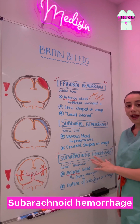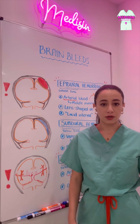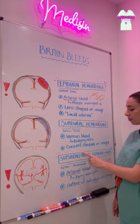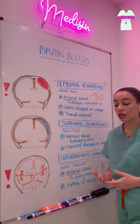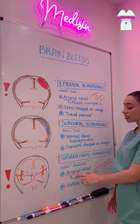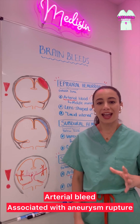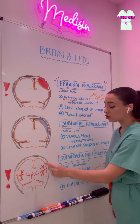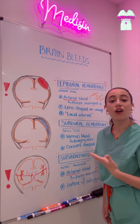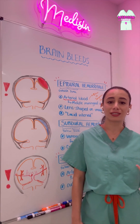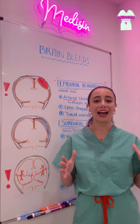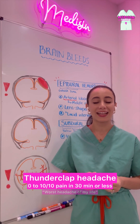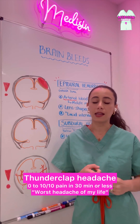Finally, we have subarachnoid hemorrhages. These are unique because they're usually not associated with blunt force trauma, even though they technically could be. Subarachnoid hemorrhages occur below the arachnoid matter and are usually arterial blood — so again, this is an emergency. This is arterial bleeding usually caused by an aneurysm that has ruptured. The classic symptom is a thunderclap headache, where a person's headache goes from zero to 10 out of 10 pain in less than 30 minutes. It is classically the worst headache of their life — not like a migraine or a tension headache. It is unique.